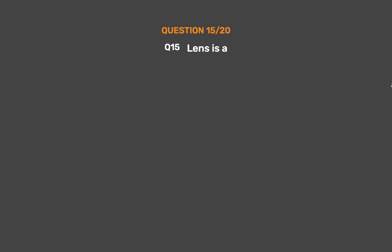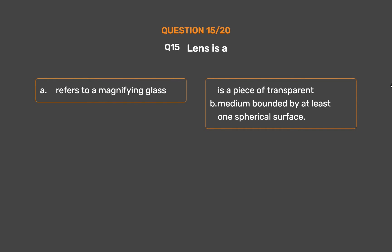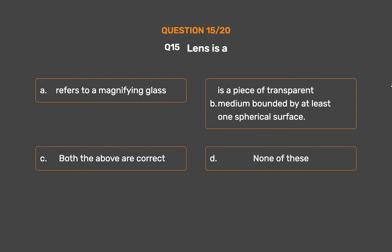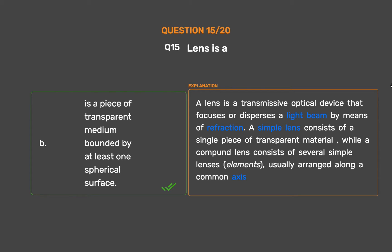Question number 15. Lenses: option A, refers to a magnifying glass; option B, is a piece of transparent medium bounded by at least one spherical surface. A lens is a transmissive optical device that focuses or disperses a light beam by means of refraction. A simple lens consists of a single piece of transparent material, while a compound lens consists of several simple lenses, usually arranged along a common axis.